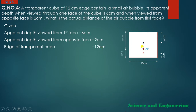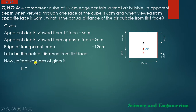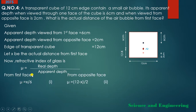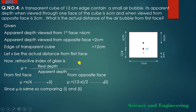Let x be the actual distance of the air bubble from the first face. Then the remaining distance from the opposite face is (12 − x). Using the formula μ = real depth / apparent depth: For the first face: μ = x / 6 ... (Equation 1). For the opposite face: μ = (12 − x) / 2 ... (Equation 2).